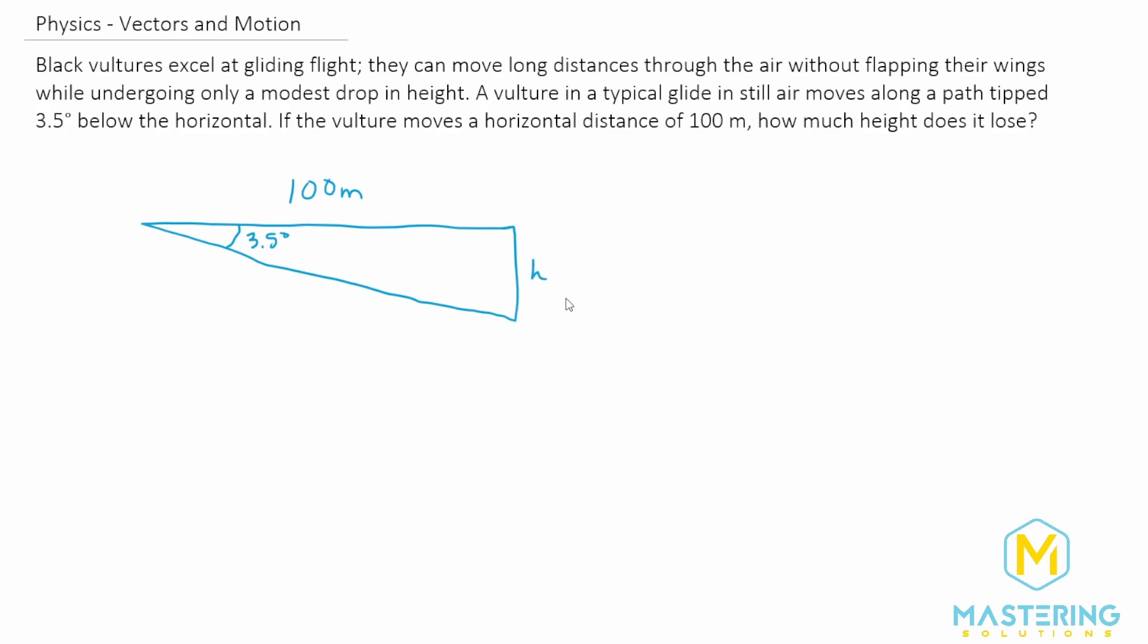So right here, we'll say H is the height where the vulture is going to start, and then it drops. That distance is how much it's going to lose. So to use this, obviously we just created a right triangle so we can use SOH CAH TOA.